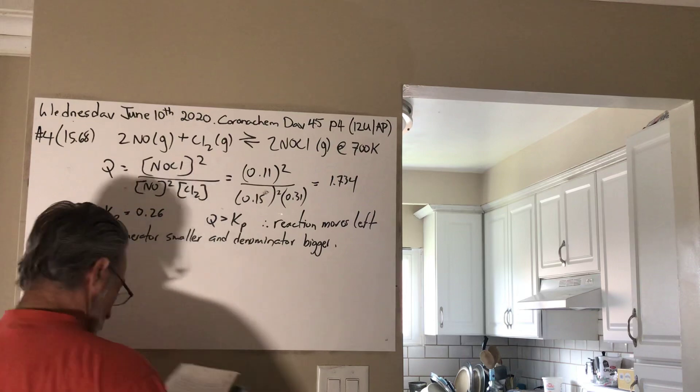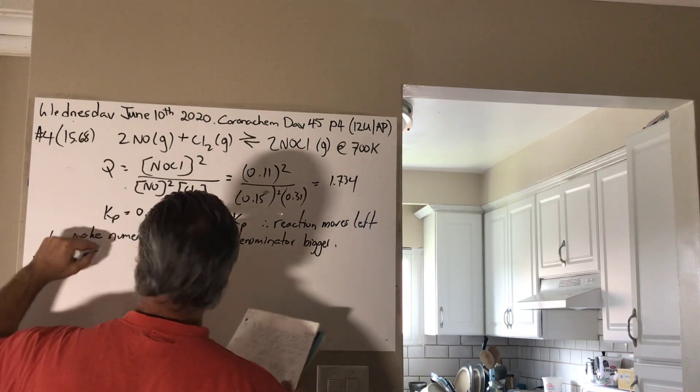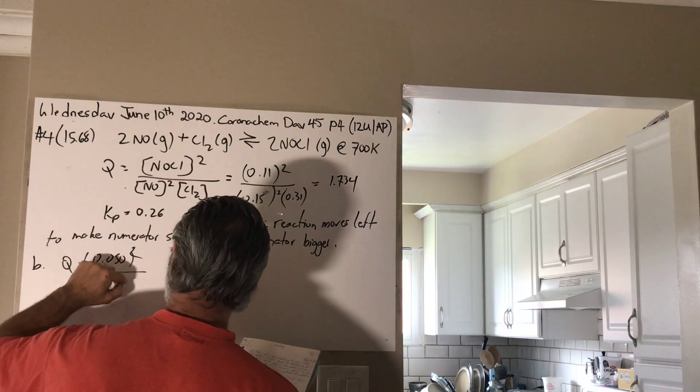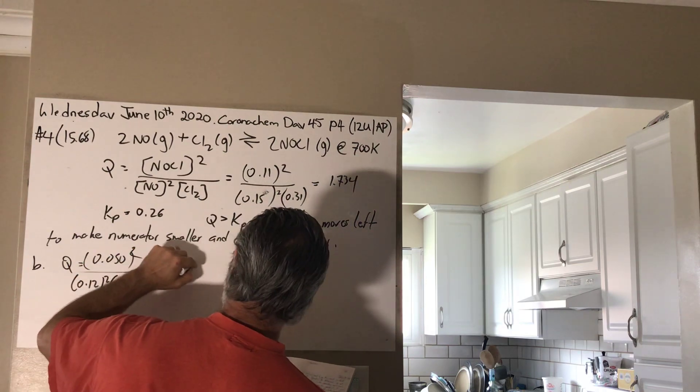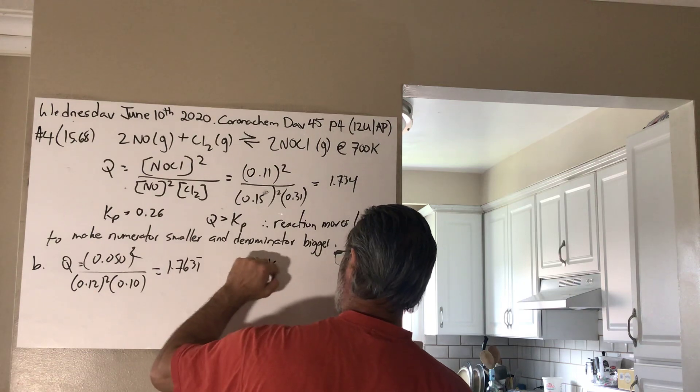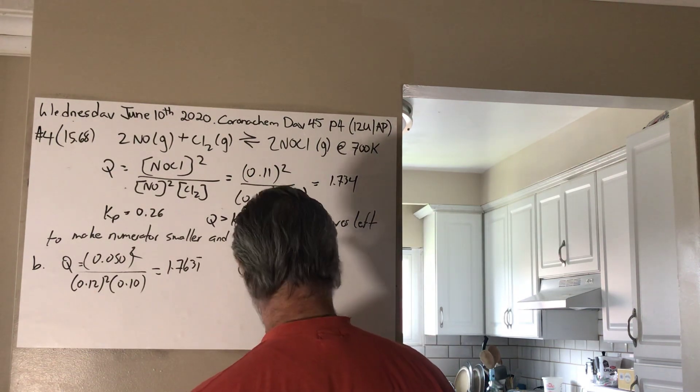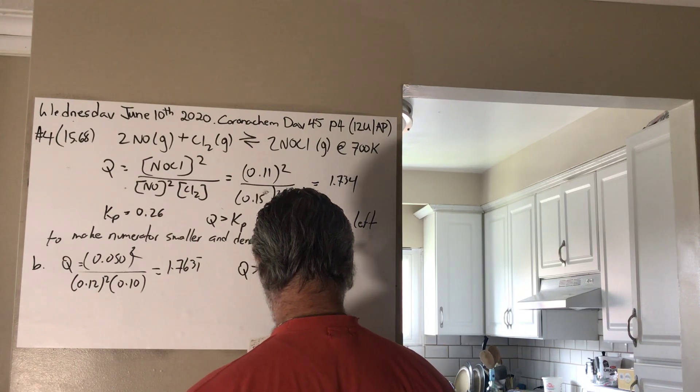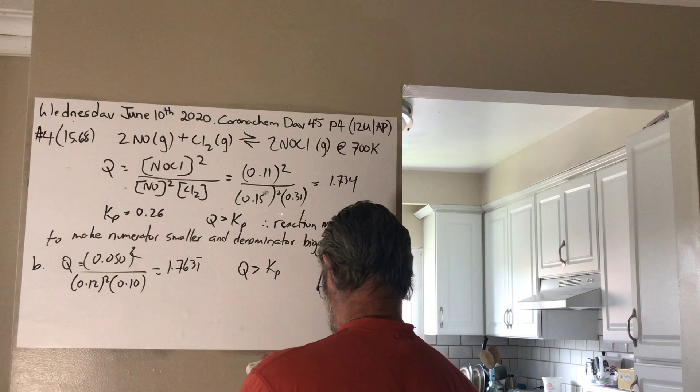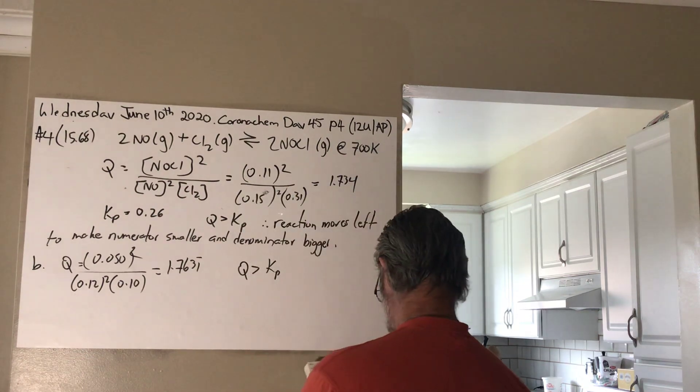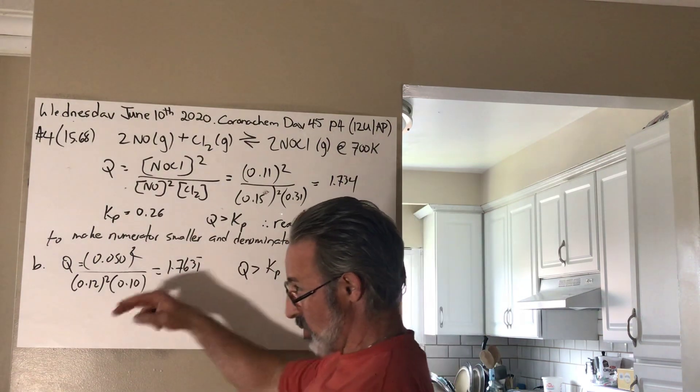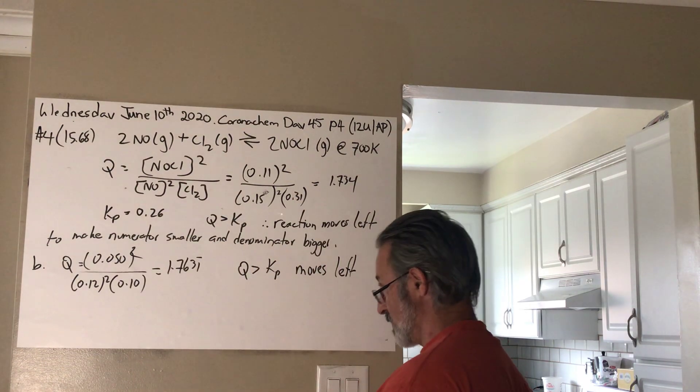Part B. I'll have the same question. You get Q equals 0.050 squared over 0.12 squared times 0.1. And that gives you 1.7361 recurring. Q is bigger than Kp. I put the wrong answer here. Q is bigger than Kp, so the reaction has to move to the... No, I didn't. It's left. It moves left. It moves left. Okay? Because it's going to make the numerator smaller, so it's going to produce more reactants.